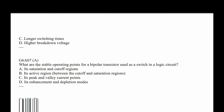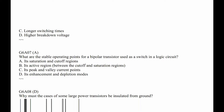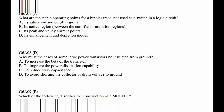G6A07. What are the stable operating points for a bipolar transistor used as a switch in a logic circuit? It's bipolar so it's going to have two sides. It's saturation and cutoff regions. This one you probably have to memorize — I don't have a good explanation for you. The answer is saturation and cutoff regions.